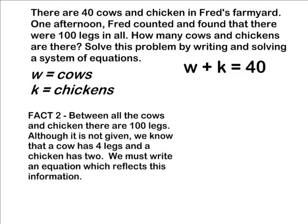Another fact given in the story problem is that between all the cows and chickens, there are 100 legs. So we must write an equation representing 100 total legs between the cows and chickens on the farmyard.